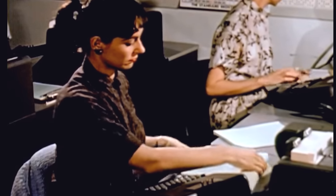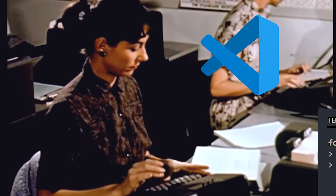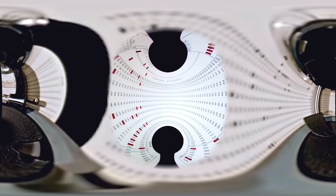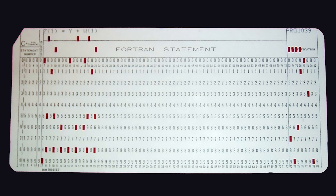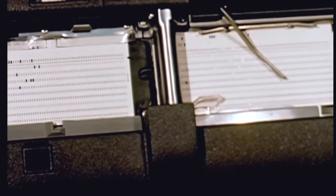When your grandma wrote Fortran back in the 70s, she didn't have access to fancy tools like editors and terminals, and instead wrote her code on a punch card. Each card represents one line of code, and is kept neatly in a stack, where it can then be fed into a card reader to be compiled.